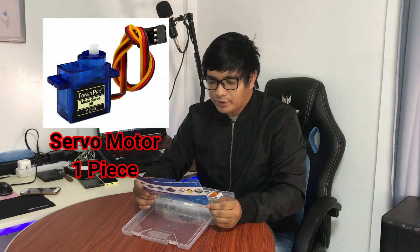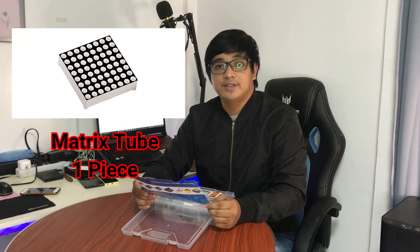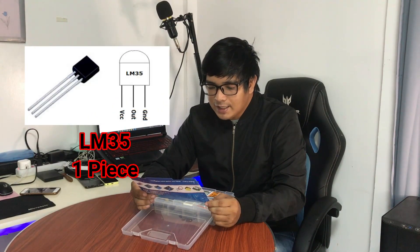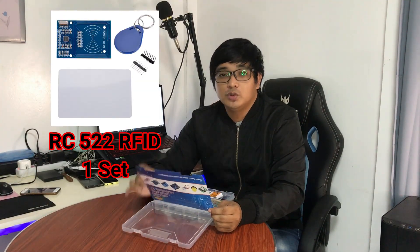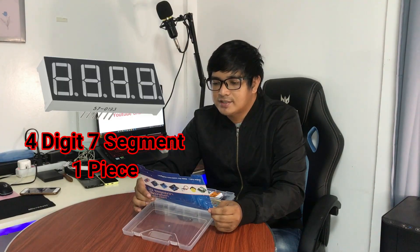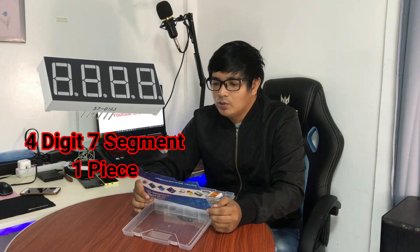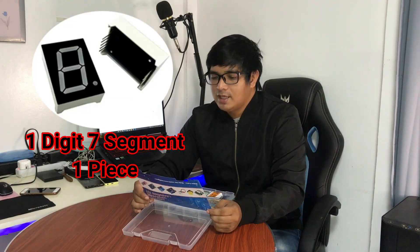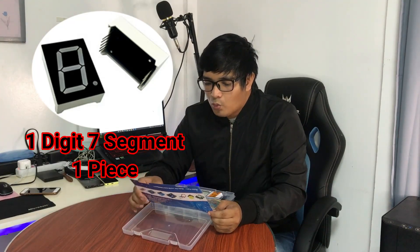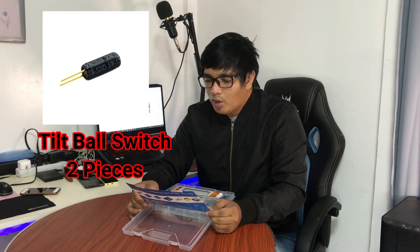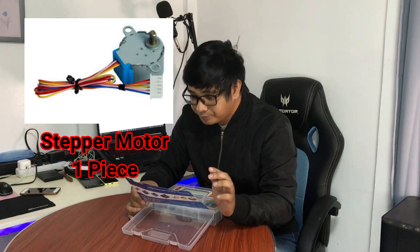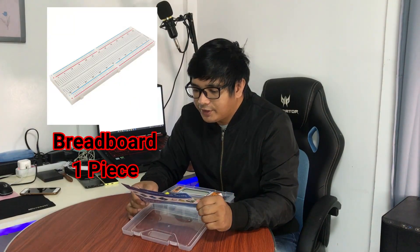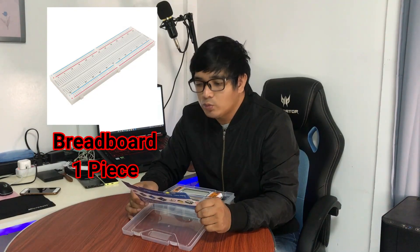There are still like servo motor SG90 one piece, we have matrix tube one piece, we have LM35DZ one piece, flame sensor one piece, we have RFID module RC522 one piece, and we have four digit seven segment LED display one piece, one channel relay module, tilt ball switch two pieces, button five pieces, we have motor one piece, we have 830 tie points breadboard one piece.